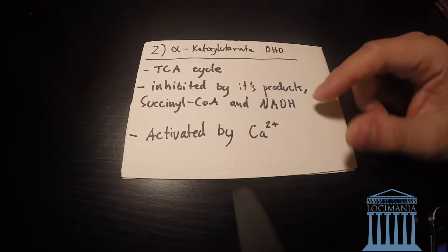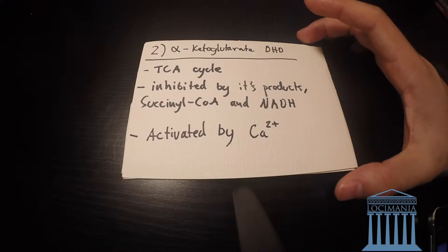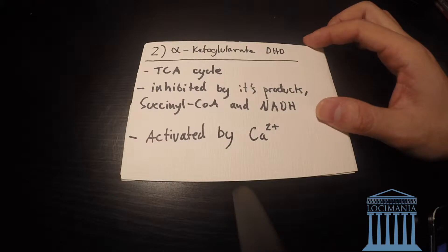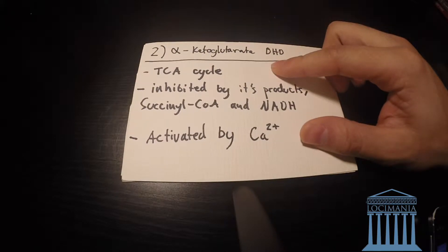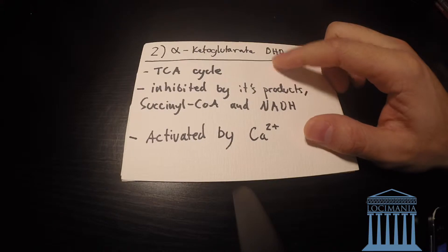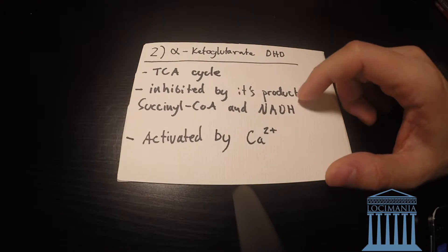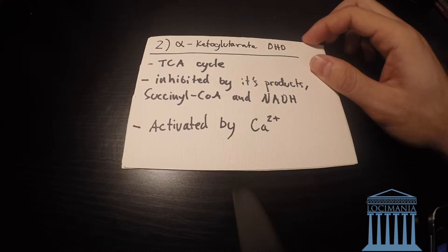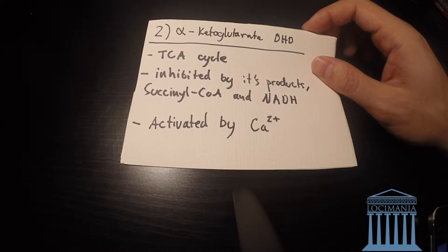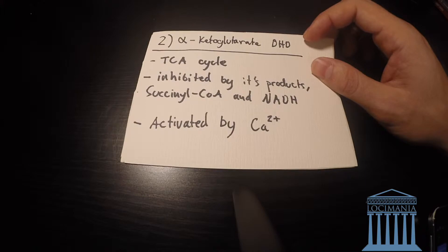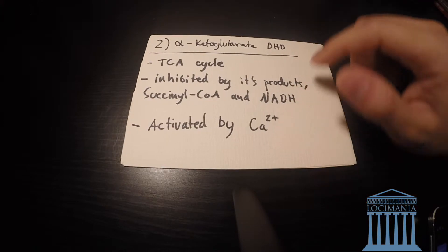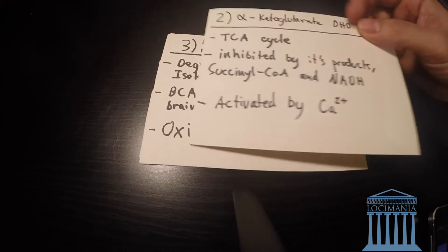The second enzyme is alpha-ketoglutarate dehydrogenase. It's in the TCA cycle and is inhibited by its products, succinyl-CoA and NADH. It's activated by calcium.